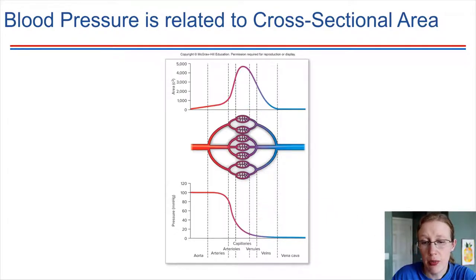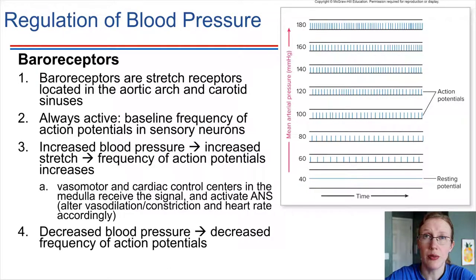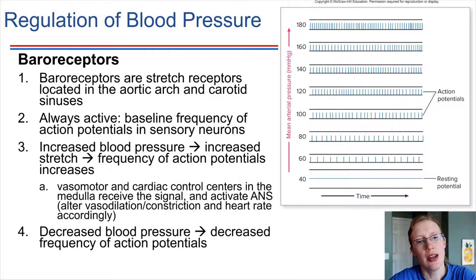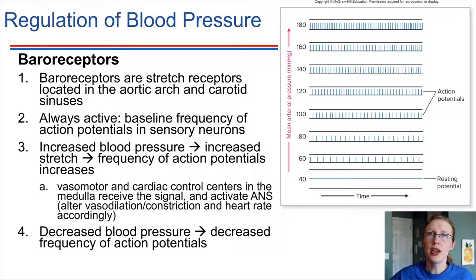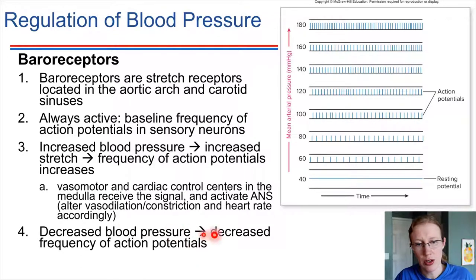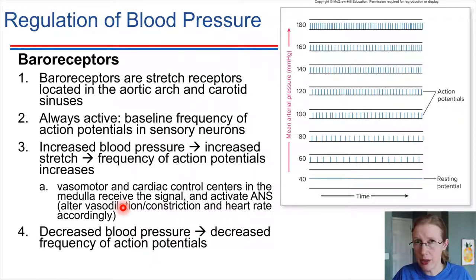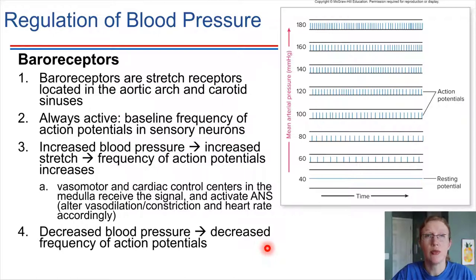Blood pressure is very important to maintain, so our bodies have ways of detecting it through receptors called baroreceptors. Baroreceptors are just another type of stretch receptor, located inside the aortic arch and also inside the carotid sinuses. They are always sending action potentials at a baseline frequency. If blood pressure increases, it increases the stretch on these receptors, causing them to fire more frequently and send more frequent action potentials up to the nervous system, leading to vasoconstriction or vasodilation. A decrease in blood pressure decreases the frequency of action potentials, triggering blood vessels to constrict to bring blood pressure back up to normal.